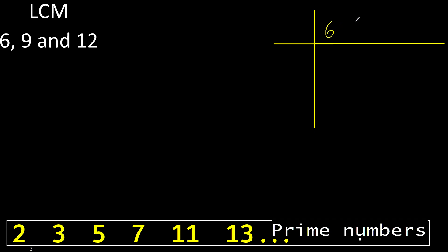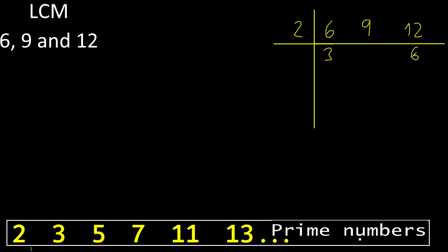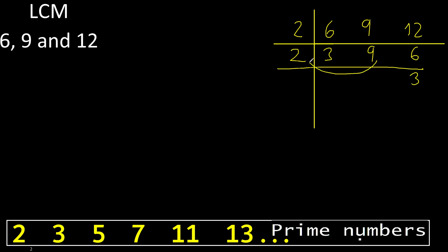Can 6, 9, or 12 be divided by 2? Yes. 6 divided by 2 is 3. 12 divided by 2 is 6. 9 cannot be divided by 2, therefore equal. Can be divided by 2: 6 divided by 2 is 3. 9 cannot be divided by 2, therefore equal.